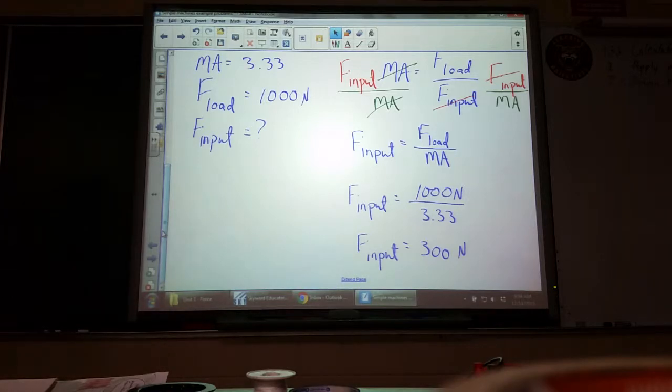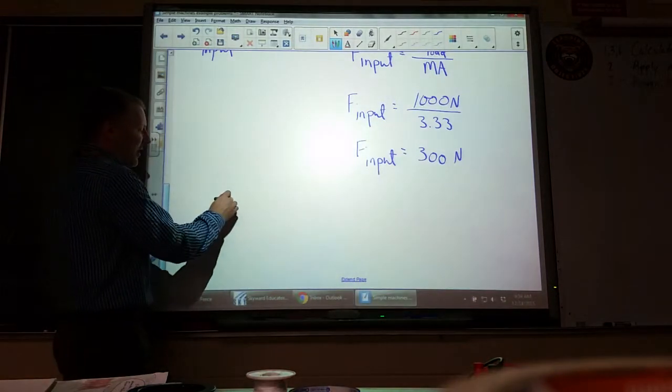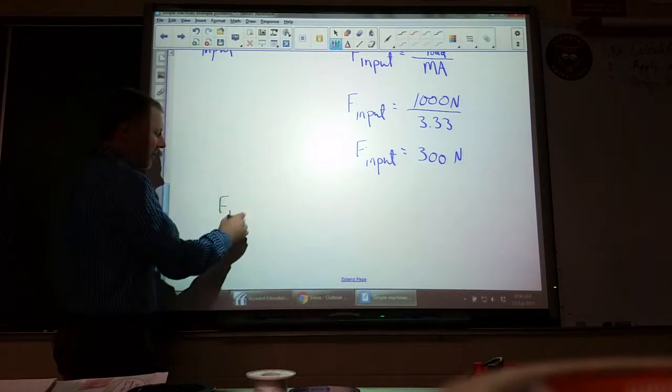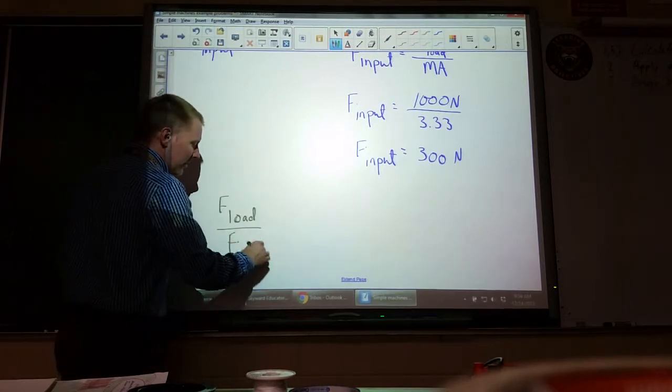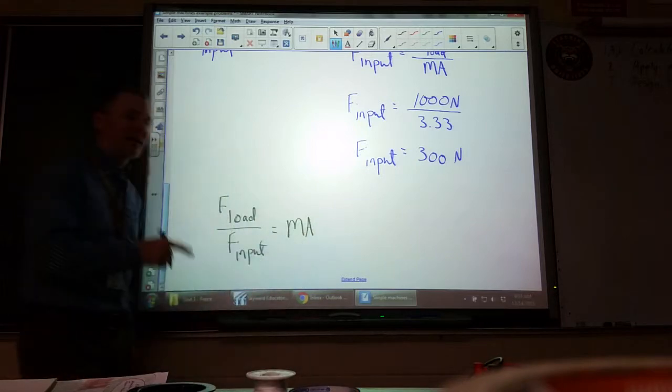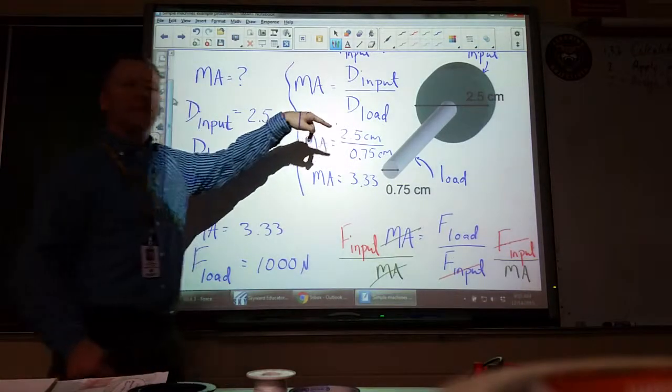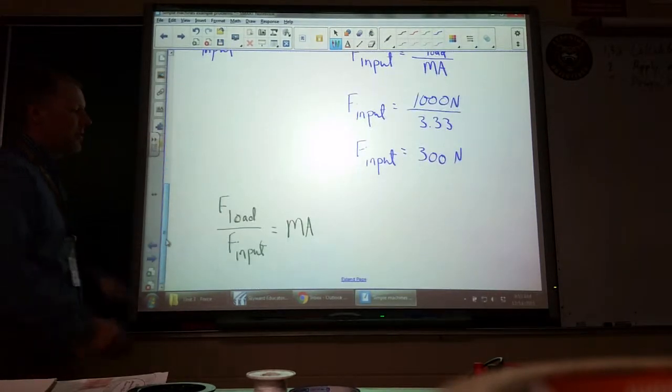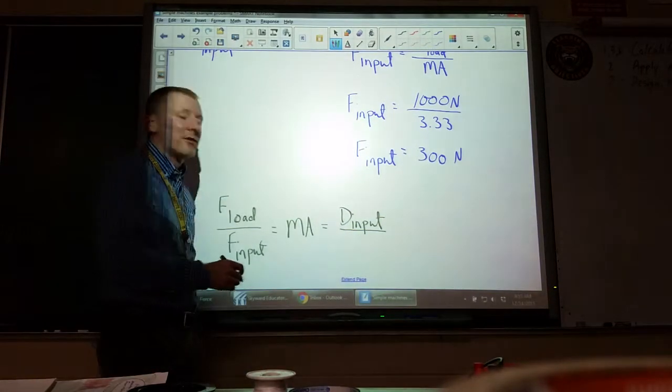Now there is another way to do this, very similar. In the top we said, well I want to find F_input but I don't know F_input, so I have to use in my second part here the fact that F_load over F_input equals mechanical advantage. But mechanical advantage is also, as we said up here, the D_input over D_load for this machine. So if both of those find mechanical advantage, they must be equal to each other.